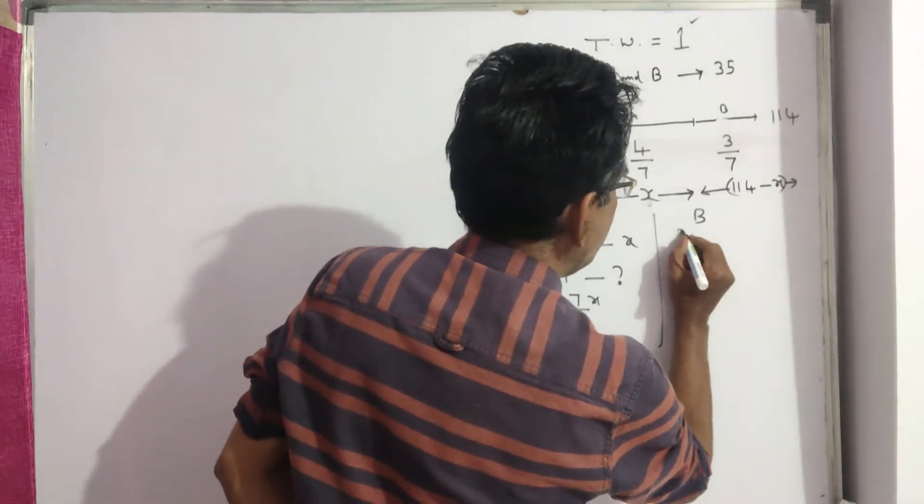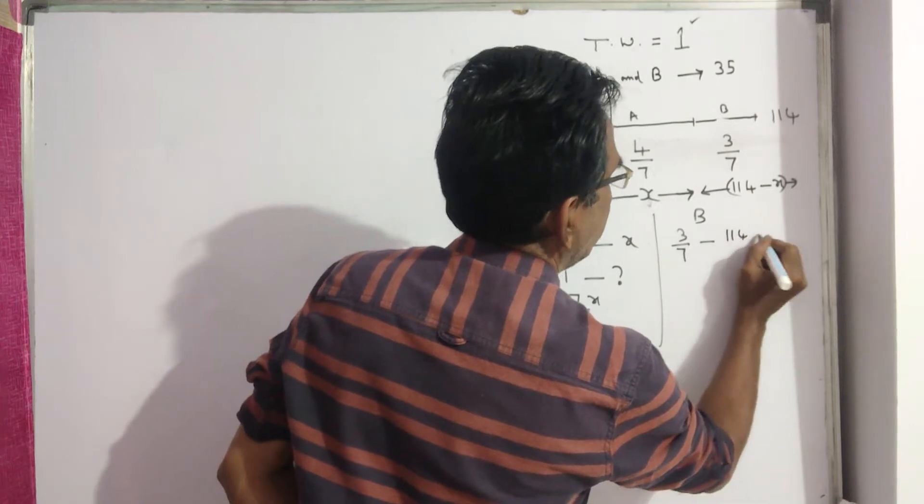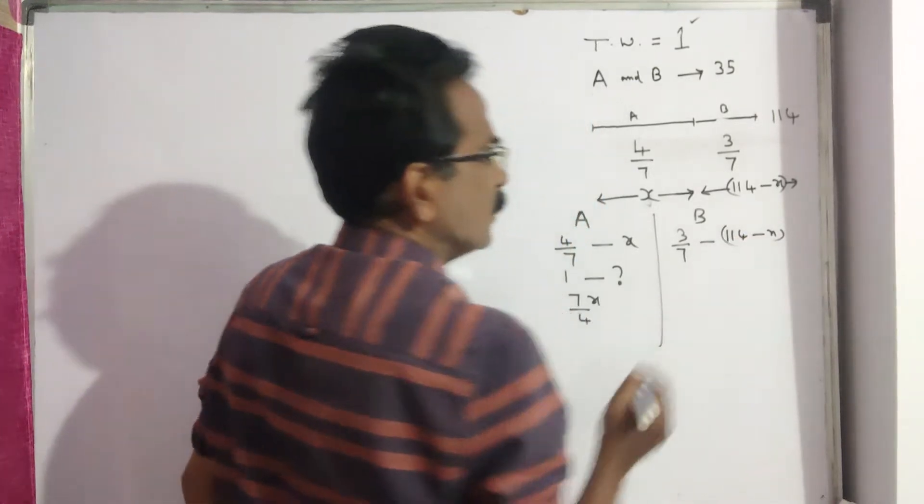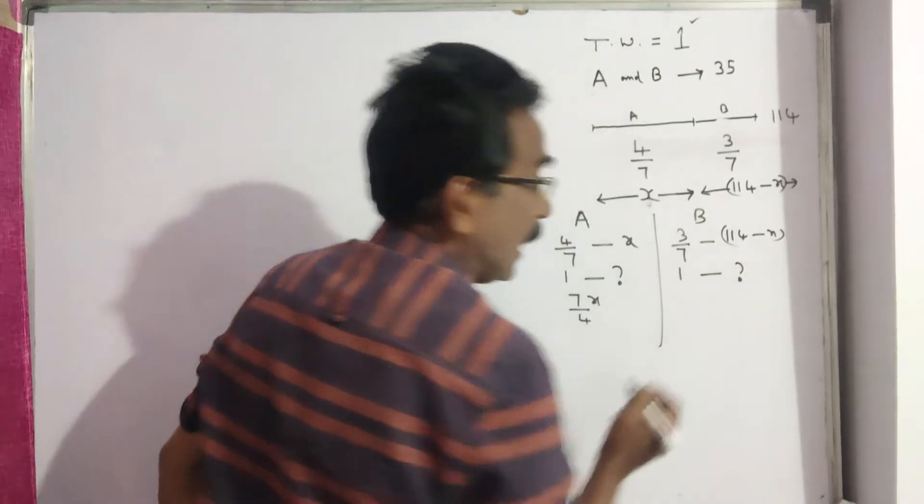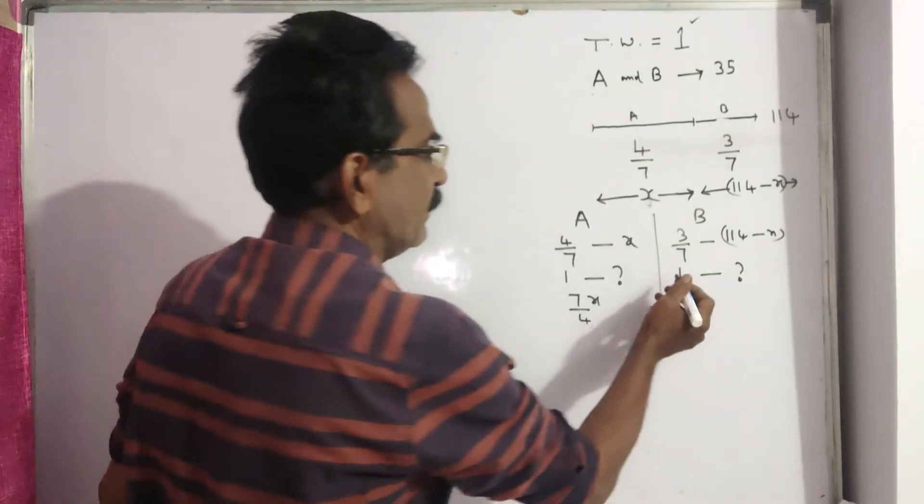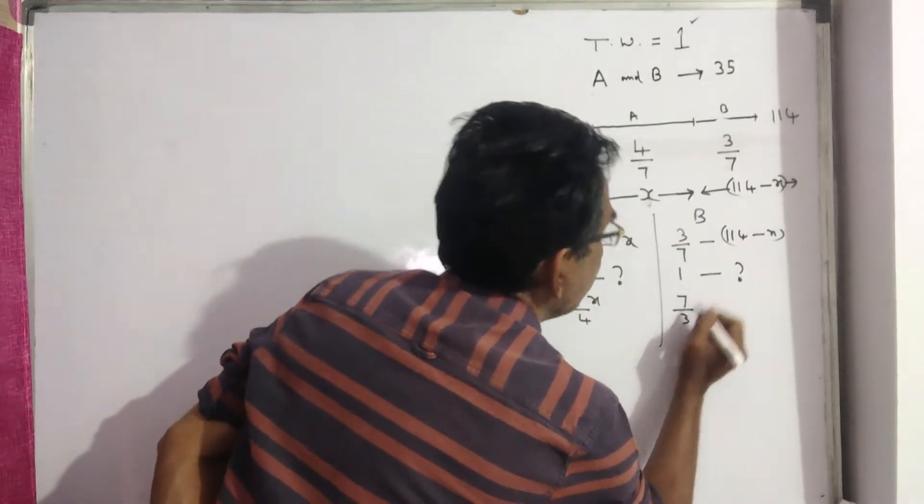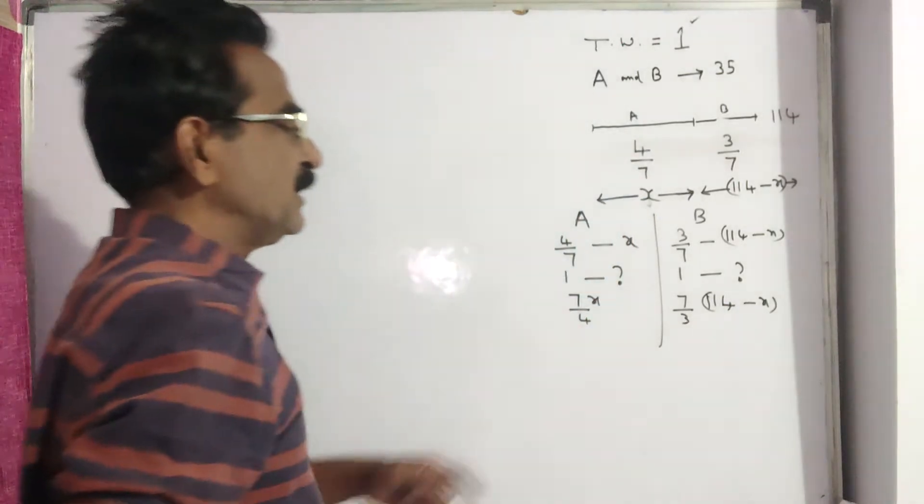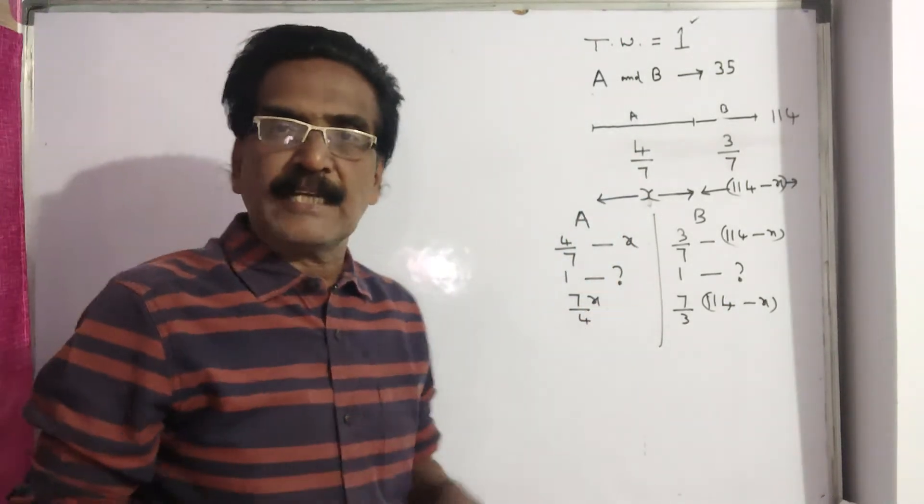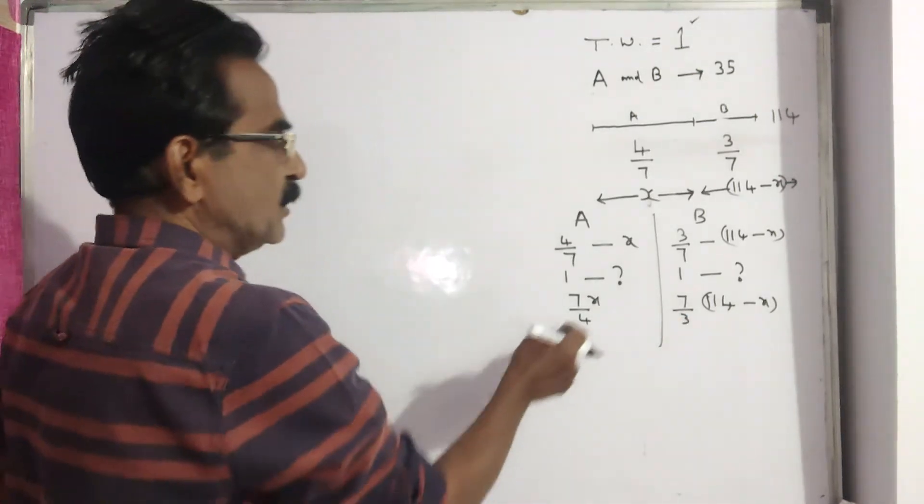B completes 3 by 7 of work in 114 minus x days. So B completes the total work, that is 1 work. B alone can complete the total work in how many days? 1 by 3 by 7 means 7 by 3 into 114 minus x. Now we know the number of days in which A alone can complete and B alone can complete the work.